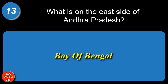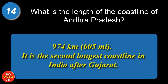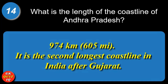What is on the east side of Andhra Pradesh? Bay of Bengal. What is the length of the coastline of Andhra Pradesh? 974 kilometers. It is the second longest coastline in India after Gujarat.